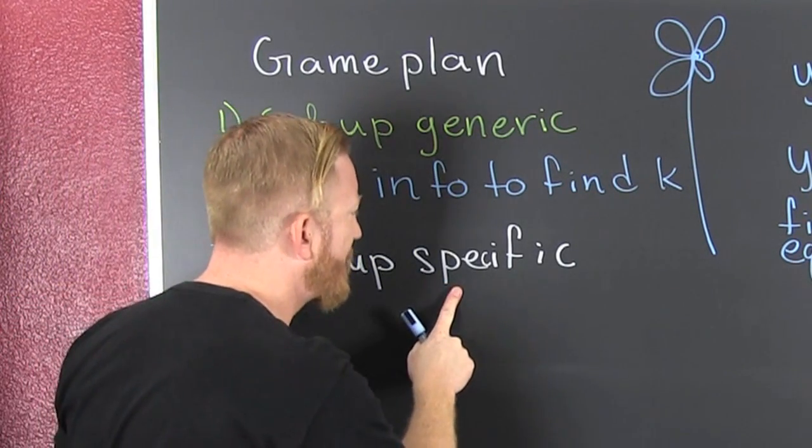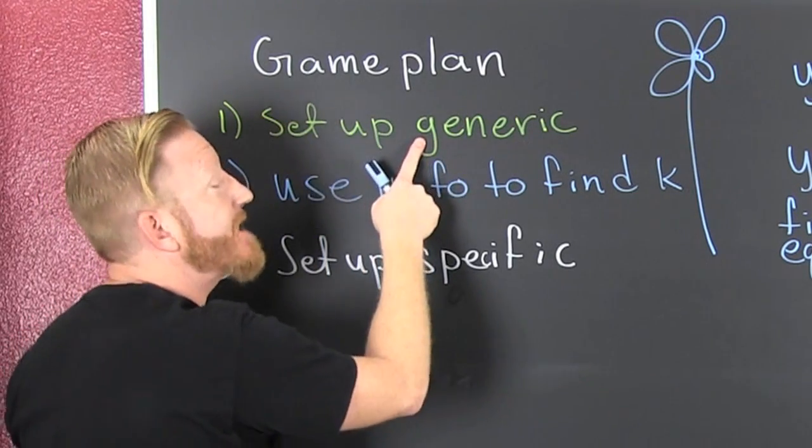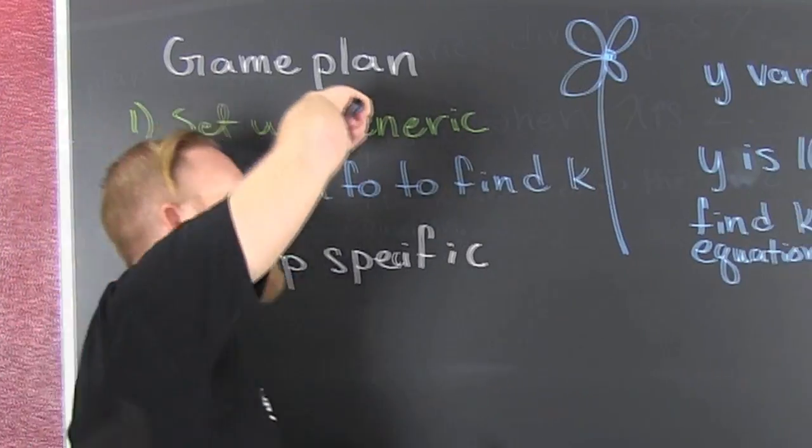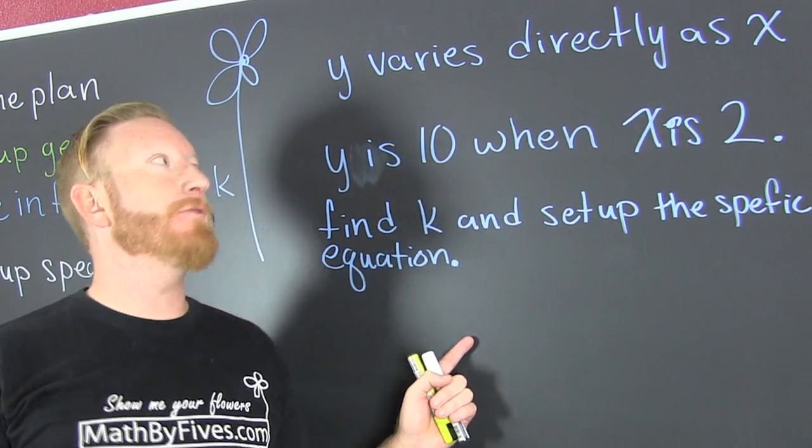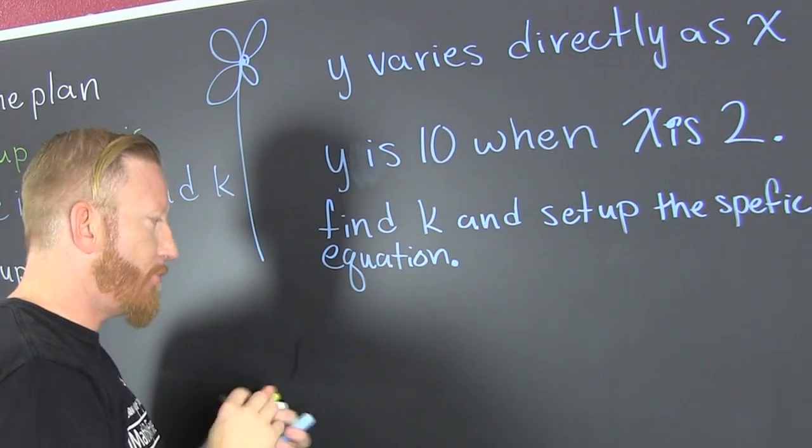Is that how you spell specific? I don't know, spelling is the thing. I don't even know if that's how you spell generic, but we have this generic example over here. Y varies directly as x. That's step one.